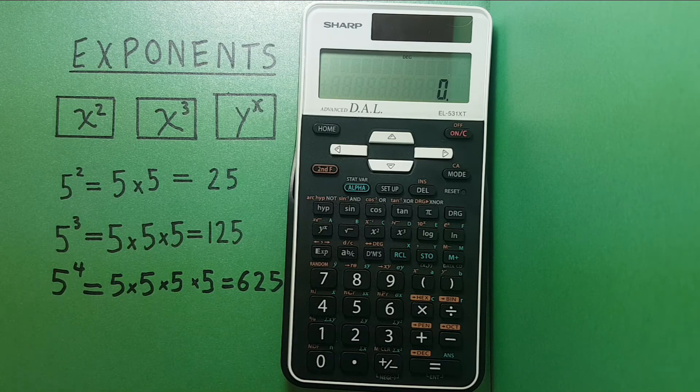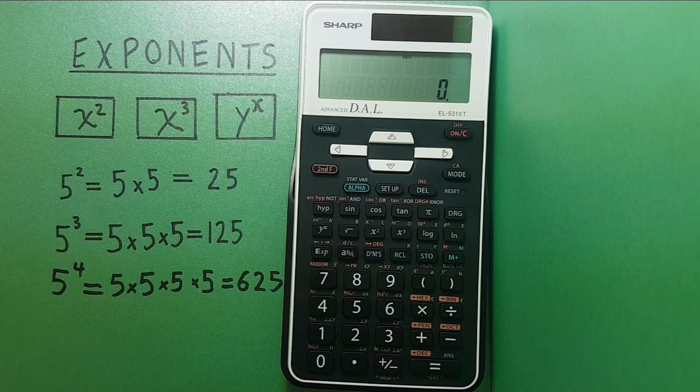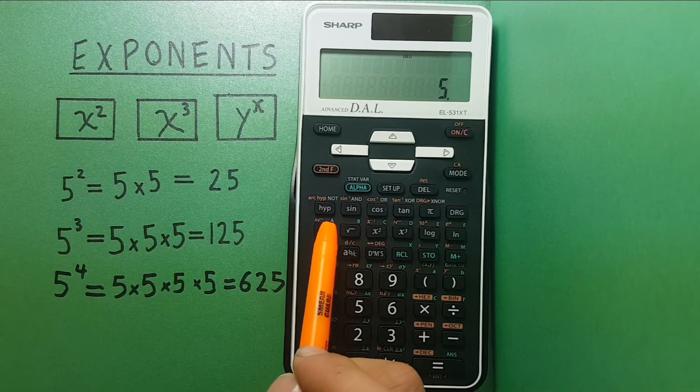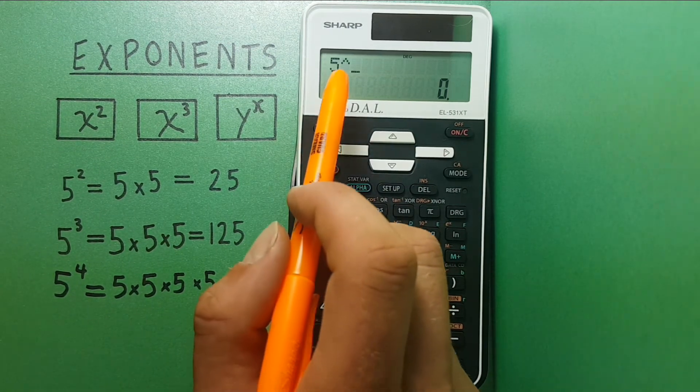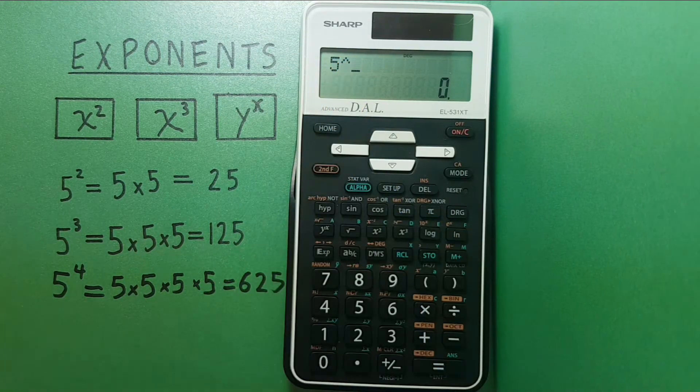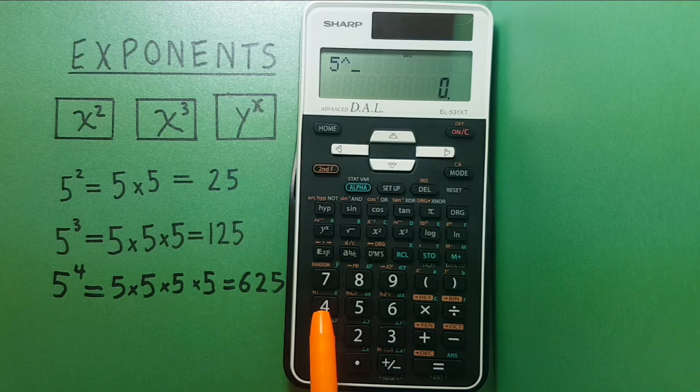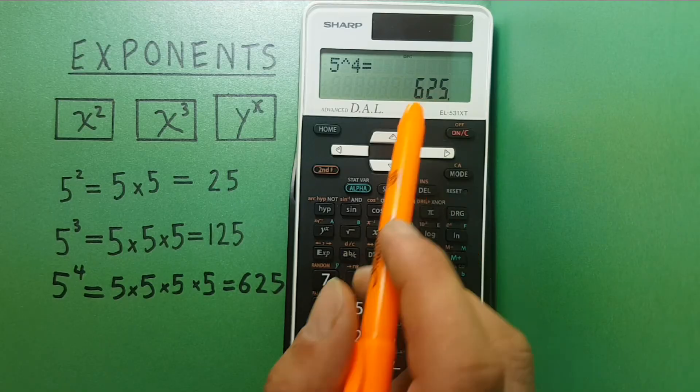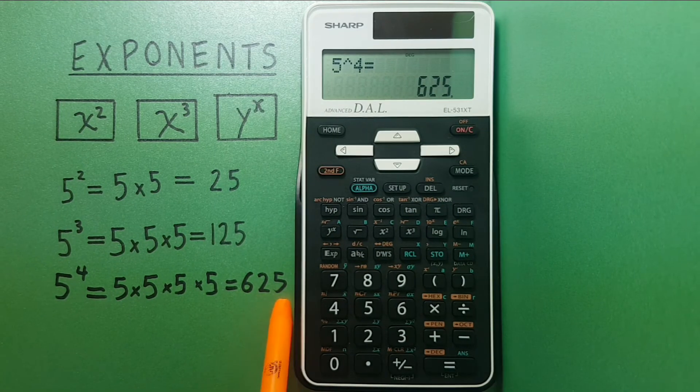So if we wanted to do 5 to the power of 4, we would again enter 5, then the Y to the X button, and we see here there's the up arrow after the 5 indicating the exponent, and then we enter the exponent, which in our case is 4, equals 625, which is correct.